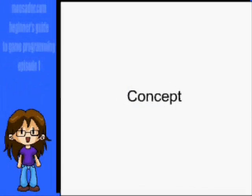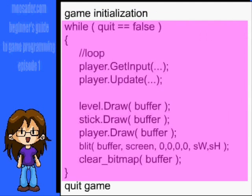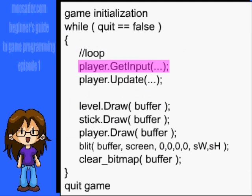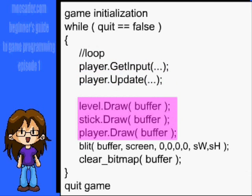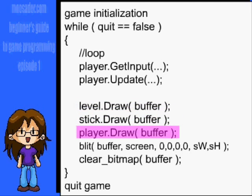Before we get into the code, let me quickly go over the concept of how to draw to the screen, as it can be confusing at first. In every game, after initialization, you go into a game loop. Every time through this loop, we check the input, update game elements, and then draw everything. For 2D games like this, you'll want to draw what is further in the background first, so we'll have the background tiles first, and then maybe items and characters.